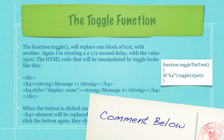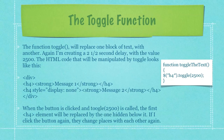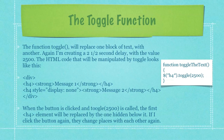The function Toggle will replace one block of text with another. Again, I'm creating a 2.5 second delay with the value 2500. The HTML code that will be manipulated by Toggle looks like what you can see here in the second bulleted item. When the button is clicked and Toggle with the value of 2500 is called, the first H4 element will be replaced by the one hidden below it. And if I click the button again, they change places with each other again and will continue to change places as many times as you hit the button.